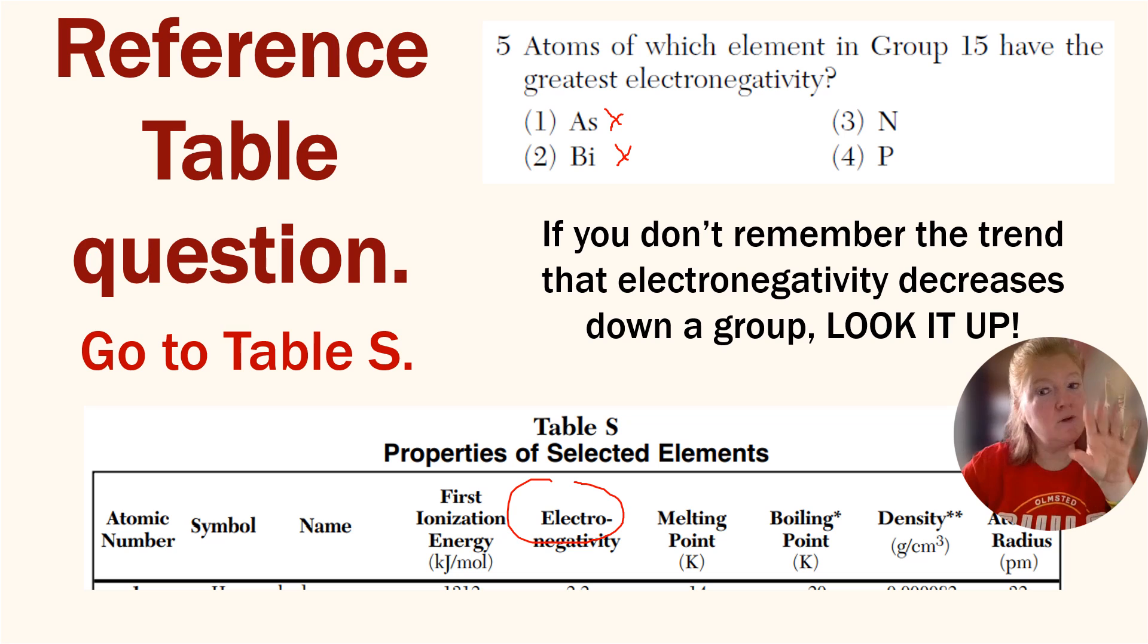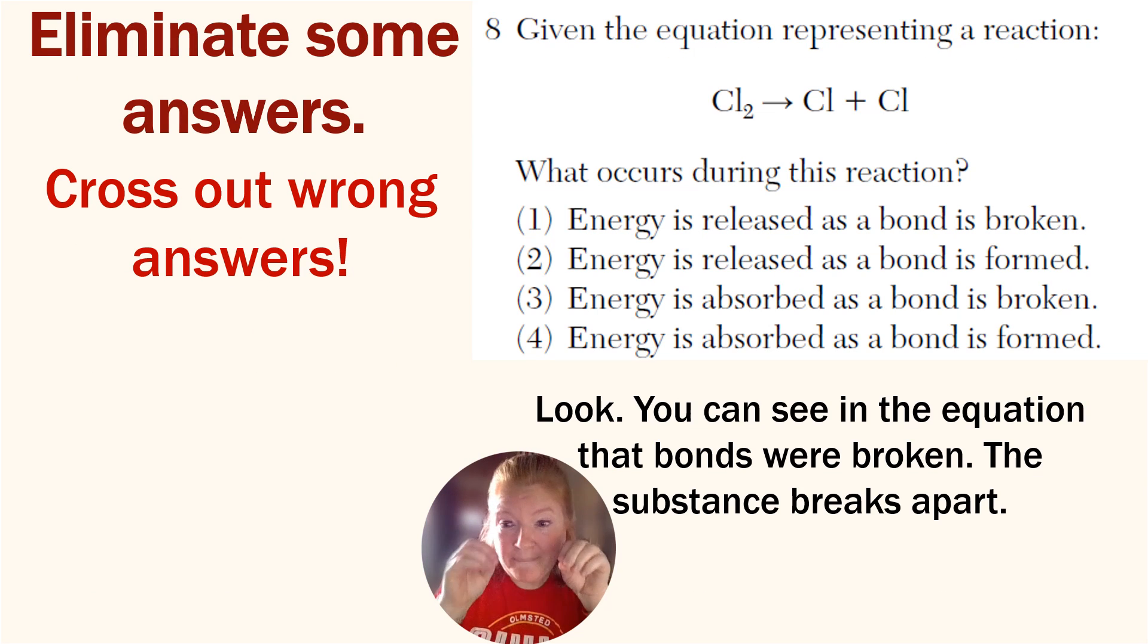Here's a straightforward reference table question: Atoms of which element in Group 15 have the greatest electronegativity? So Table S literally lists electronegativity. Find each element, look it up. Here's my suggestion: write the electronegativity value here. Stop trying to hold it in your head. Use the space you have. When you do that, you could try and answer this question right now. You can pause it, but this is the correct answer. Eliminating wrong answers is a crucial part. This example, you can see that especially when questions like this where you can see energy released and energy absorbed and bond broken and bond formed.